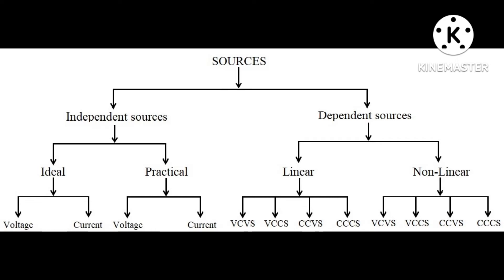Our next topic is types of sources. These sources are divided into two categories depending on the dependency: first is independent sources, second is dependent sources. Depending on the type of supply, sources are divided into two types: AC sources and DC sources. We will discuss those later.